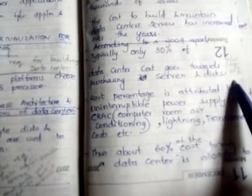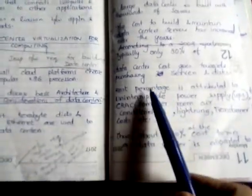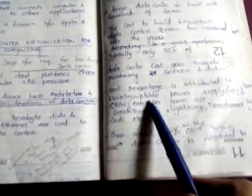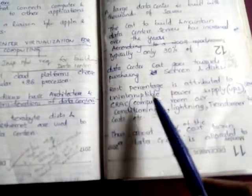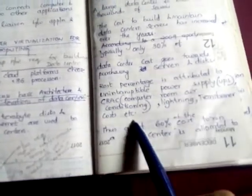The hardware requirement budget is 30 percent. The rest is attributed to uninterruptible power supply (UPS), racks, computer room air conditioning, lighting, transformer costs, etc.